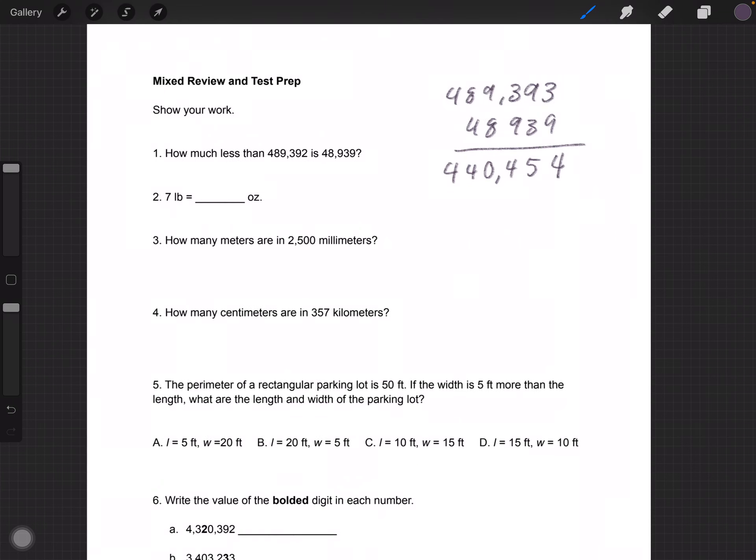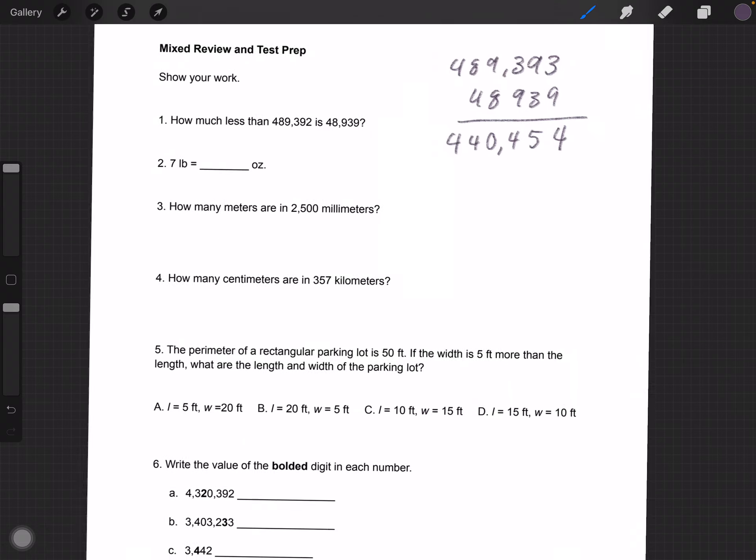Number 2, 3, and 4 are conversions that are pretty simple, you should know. Number 5 says, the perimeter of a rectangular parking lot is 50 feet.